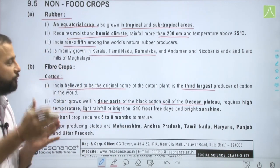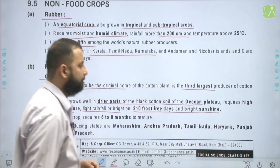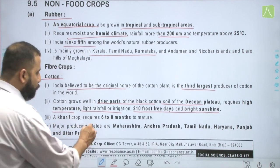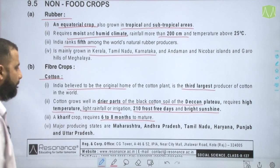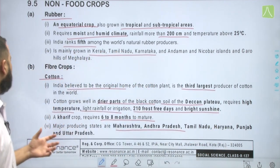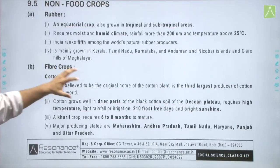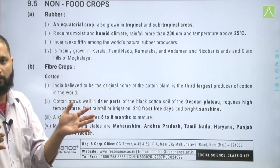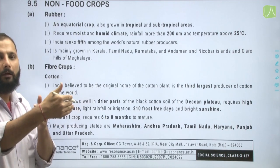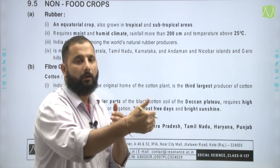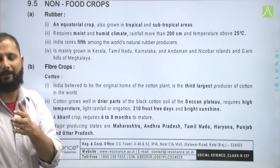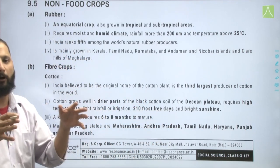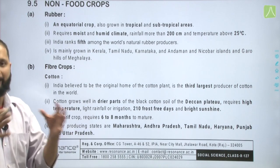Cotton grows well in the drier parts of the black cotton soil of the Deccan plateau region. It requires high temperature, light rainfall or irrigation, 210 frost-free days, and bright sunshine. It is a kharif crop requiring 6 to 8 months to mature. The term '210 frost-free days' means a continuous period of 210 days without frost, which is found mainly in tropical or torrid climatic zones. Major producing states are Maharashtra, Andhra Pradesh, Tamil Nadu, Haryana, Punjab, and Uttar Pradesh.